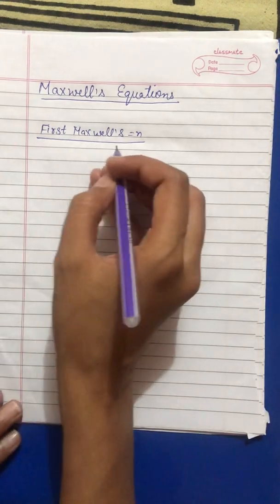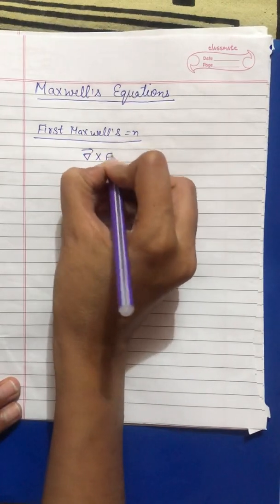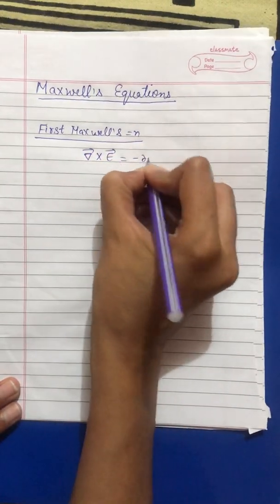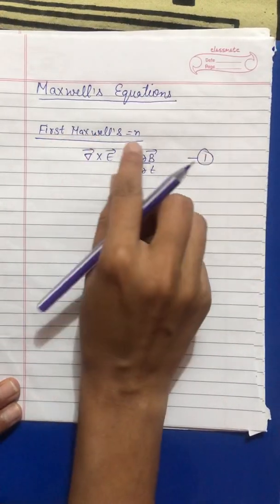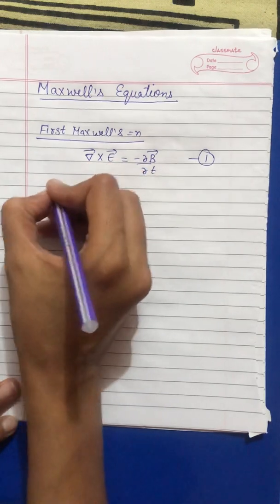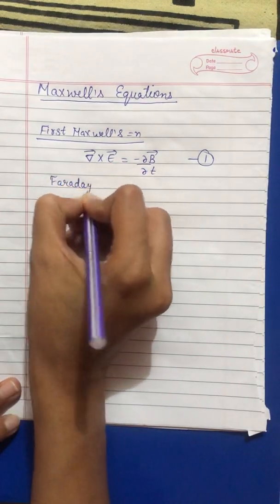First Maxwell equation is del cross E vector is equals to minus curly B upon curly T. This is the first Maxwell equation. And we will say this too, this is also the statement of Faraday's law.